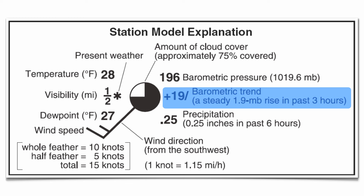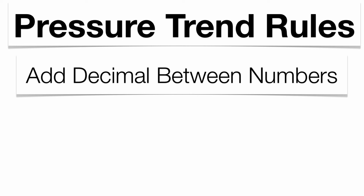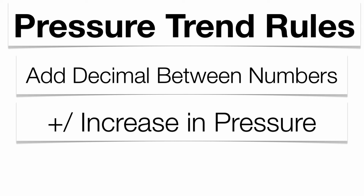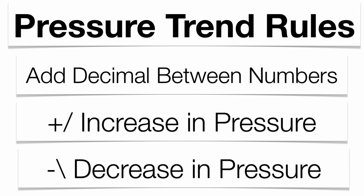The next feature is going to be your barometric trend — what has the pressure done over the last three hours? Is it rising, falling, or holding steady? A plus sign or a line sloping upward indicates an increase in pressure. A negative sign or a downward-sloping line indicates a decrease in pressure. First, add a decimal between the two numbers when you take it off the station model. That's how you tell whether the pressure has been rising or falling over the last three hours.